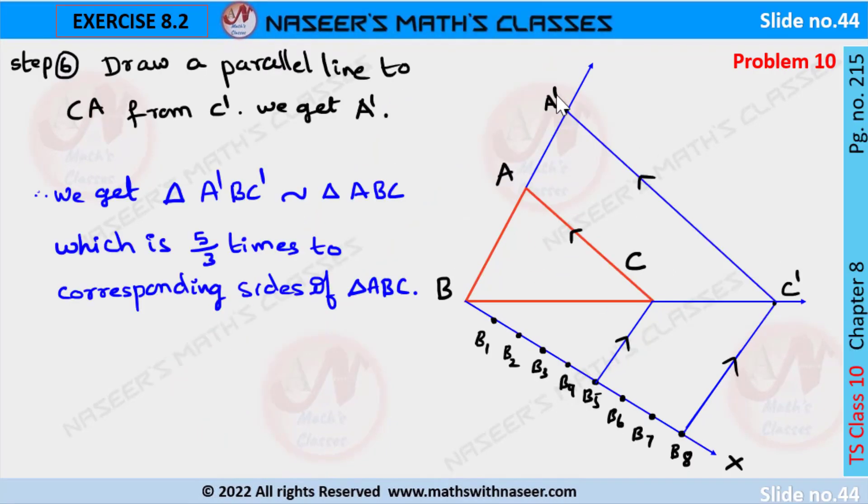C'A' is the line required which is parallel to AC, and triangle A'BC' is the similar triangle to triangle ABC which is 5/3 times the corresponding sides of triangle ABC. Please like,